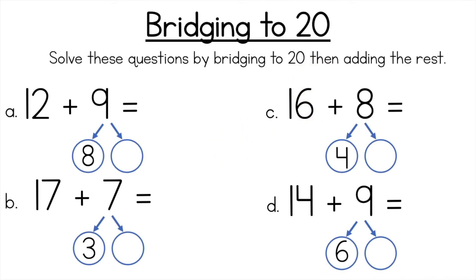Okay so now it's your turn. So solve these questions by bridging to 20 and then adding the rest. So there are 4 questions. You're going to pause it in a minute and what I've done for you is I've already added the friend of 20 in there for you. So all you need to do is figure out what number adds to make 9, what number adds to make 7, what number adds to make 8, and what number adds to make 9. So I want you to get a whiteboard or a piece of paper and a pencil and I want you to solve these 4 questions. So pause it and we're going to go through the answers in about 1 minute.